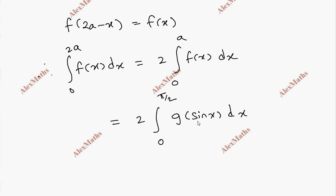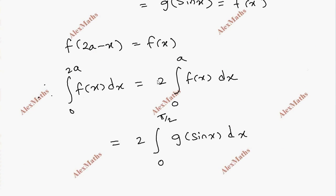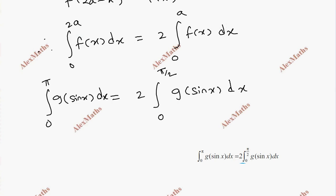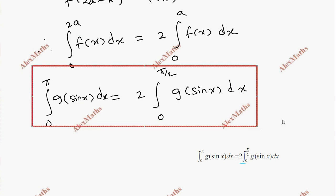So the property is applied. We have shown that integral 0 to pi of g of sin x dx equals 2 times integral 0 to pi by 2 of g of sin x dx. Hence proved.